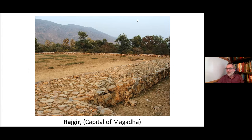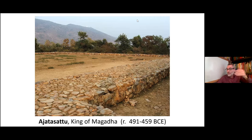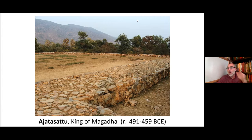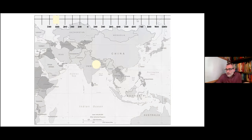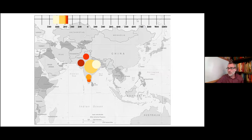There you'd find the foundation of what was once a building — supposedly a tower where King Ajatasattu imprisoned his father. Ajatasattu is a historical figure, but the point is: if you wanted to know about the Buddha historically, all you'd have are some rocks and somebody saying 'this is where the Buddha was.' We have no visual or written records from this time period.